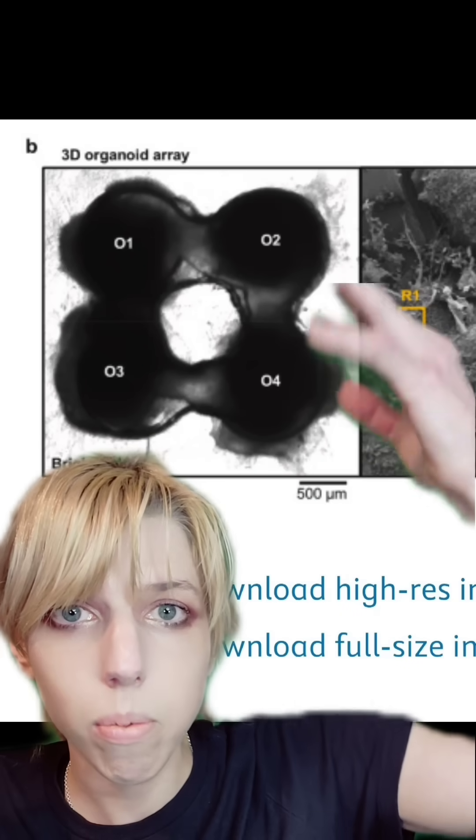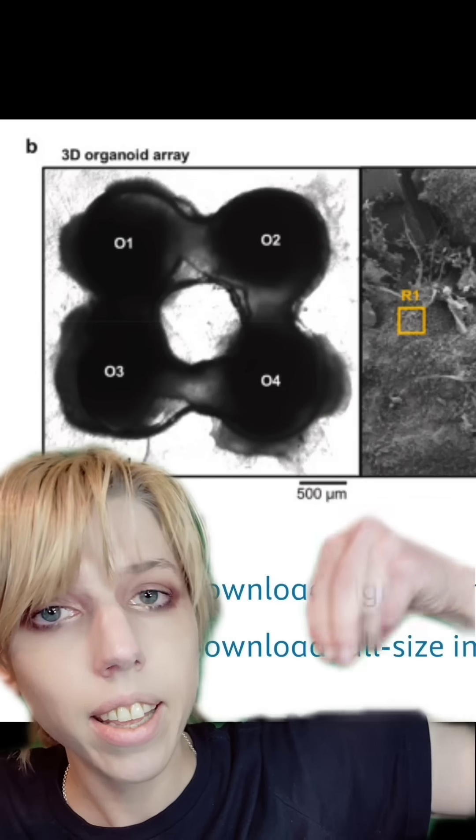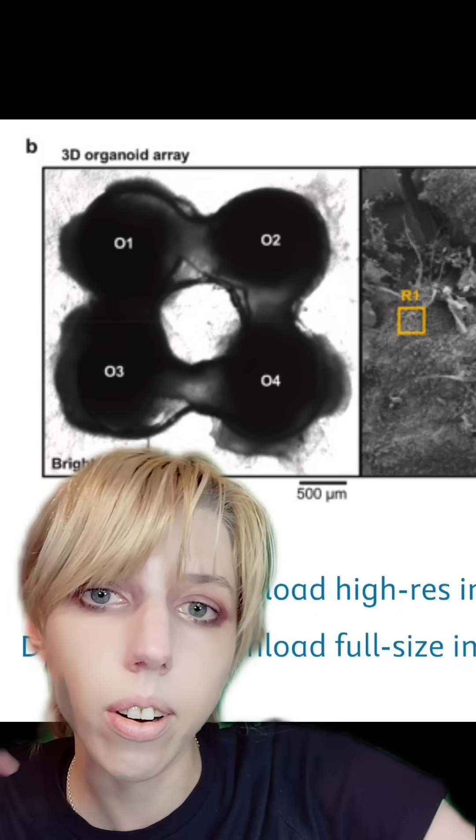I could see an array like this work. If one of them expires, which does tend to happen, they could excise it out and pop a new one in. And they do pretty well growing into other neural structures.